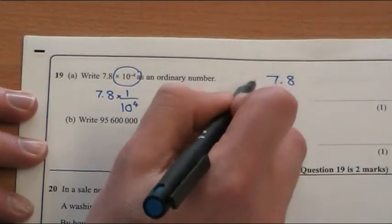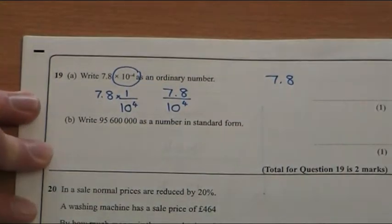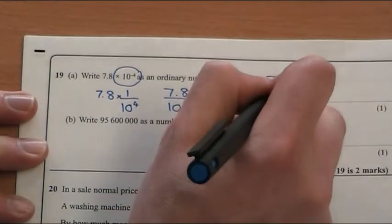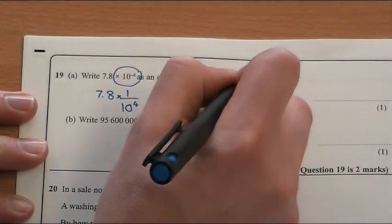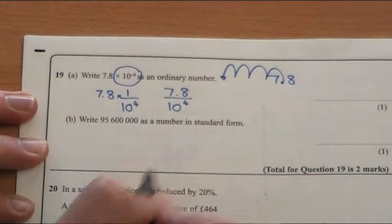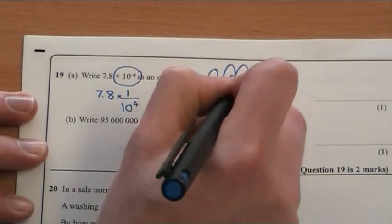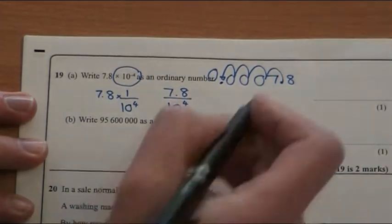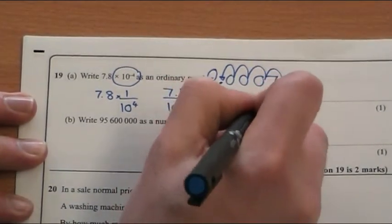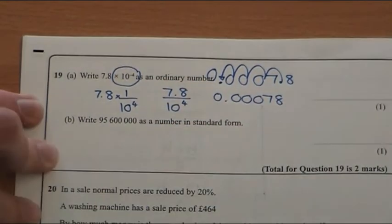So I'm going to move my point back four times. I just find that the easiest way to do it. I know the numbers are moving, but I find the point easier. So one, two, three, four. It's going to go back to there. So that's where the point is going to go. So one, two, three. So my answer is 0.00078 for one mark.